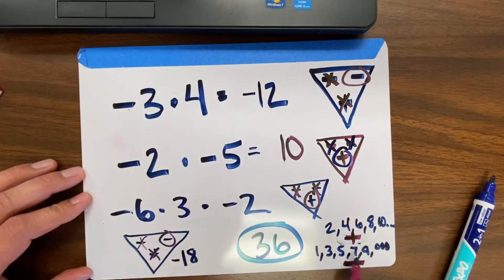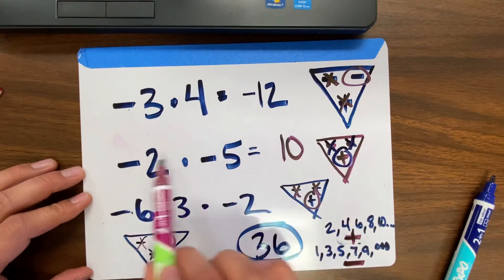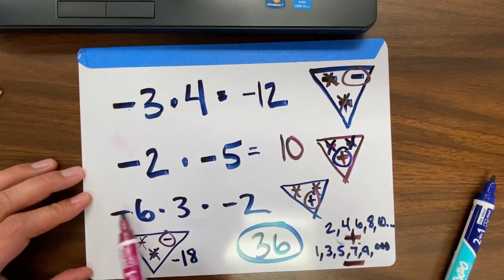So 1 negative, the answer will always be a negative. 2 negatives, it would be a positive. 2 negatives would be a positive.